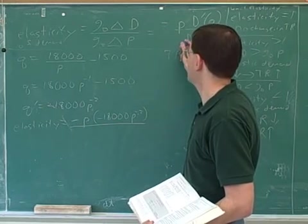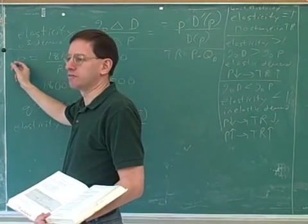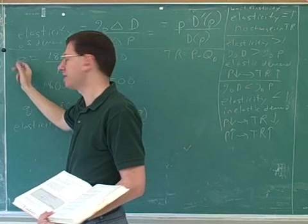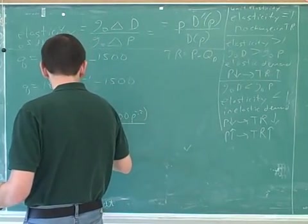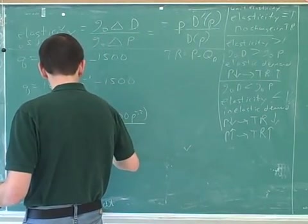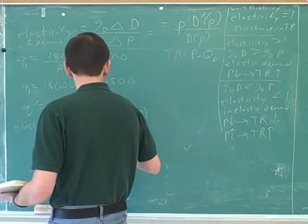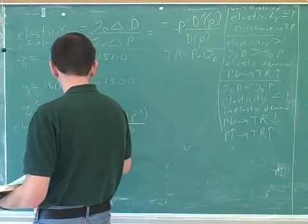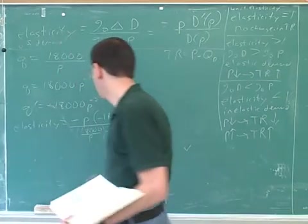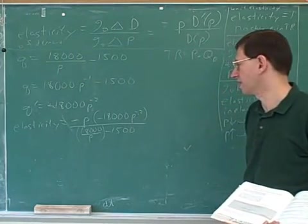And when I wrote the formula I used D for demand and this problem is using Q for quantity demanded but those are the same concept. We get a kind of complicated looking formula. This is our general formula for calculating our elasticity.